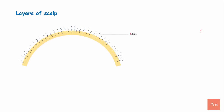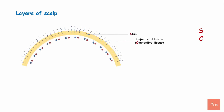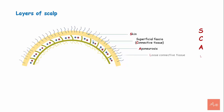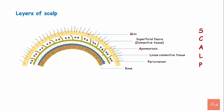The scalp has five distinct layers: Skin, which is the most superficial layer; Superficial fascia, or the connective tissue containing the veins and arteries; Aponeurosis, present below the connective tissue; Loose connective tissue, present below the aponeurosis; and the Pericranium, or the periosteum covering the cranial bone. The initial letters of these layers spell 'SCALP', making it easy to remember.